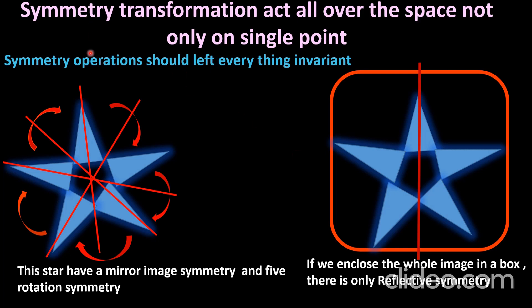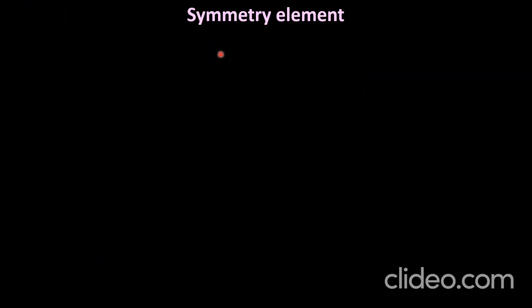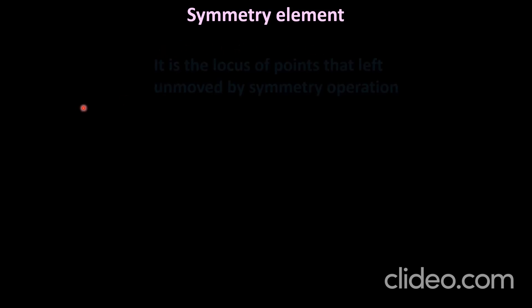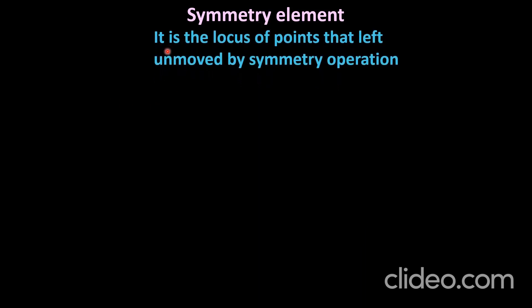The basic rule of symmetry transformation is that it should act all over the space, not only on a single point. A symmetry element is the locus of points that are left unmoved by a symmetry operation.